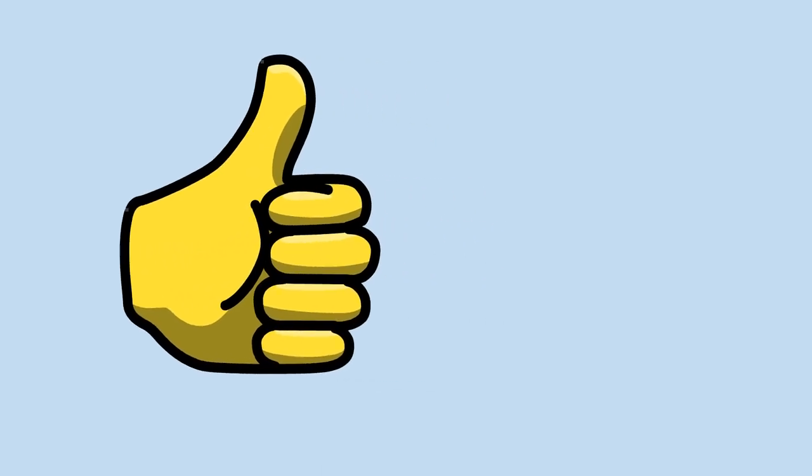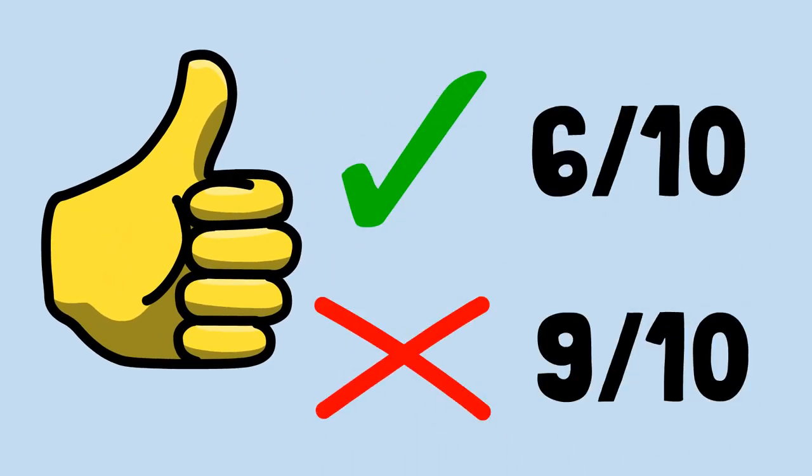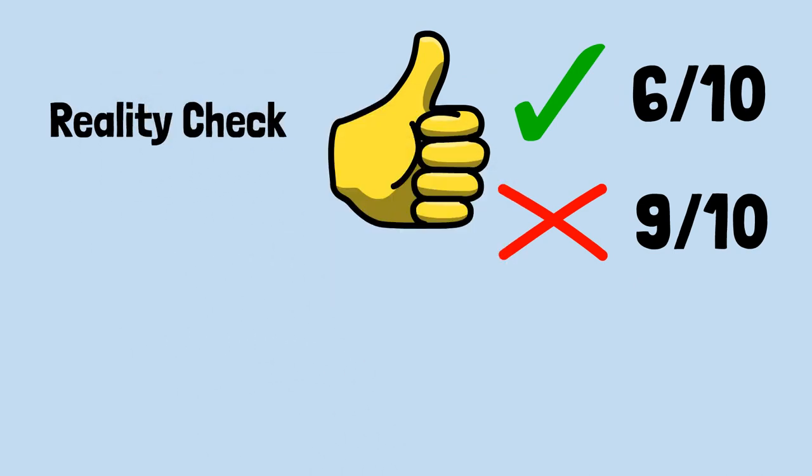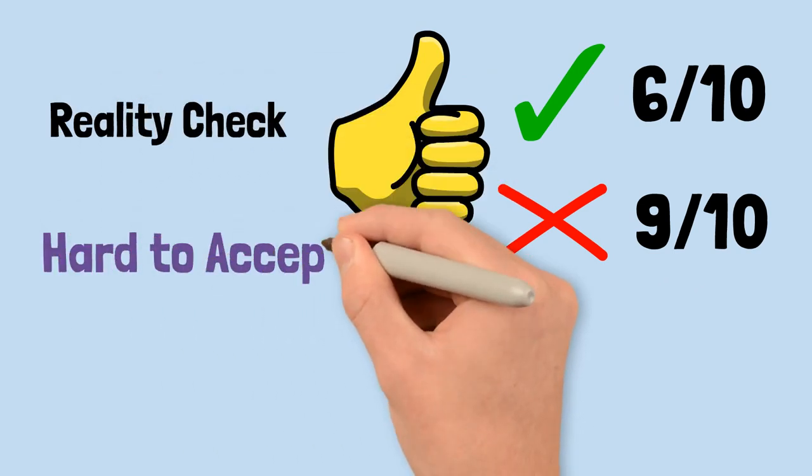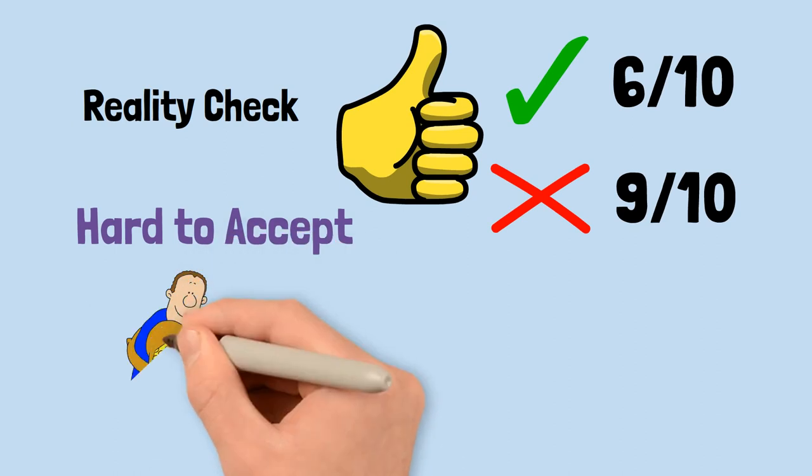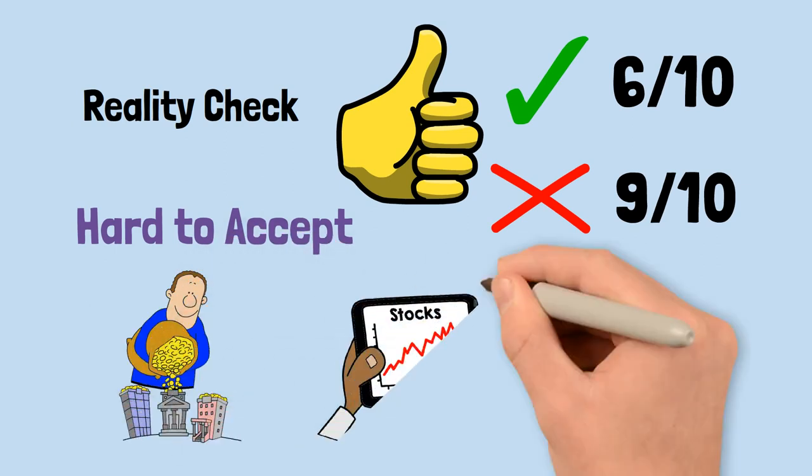Number 4: Expect to lose. In this business, if you're good, you're right 6 times out of 10. You're never going to be right 9 times out of 10. Lynch delivers a reality check. This truth, though hard to accept, is something all investors must come to grips with when investing in single stocks.